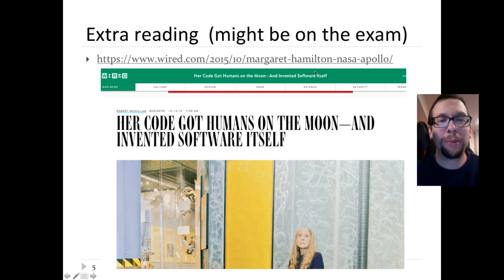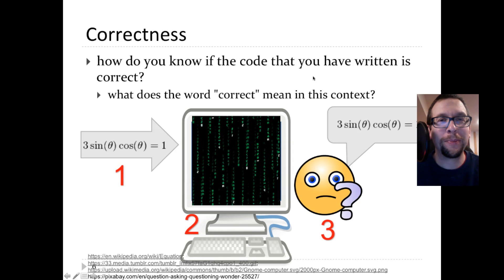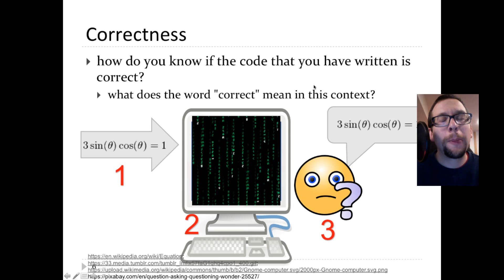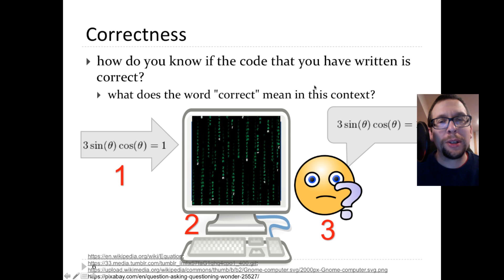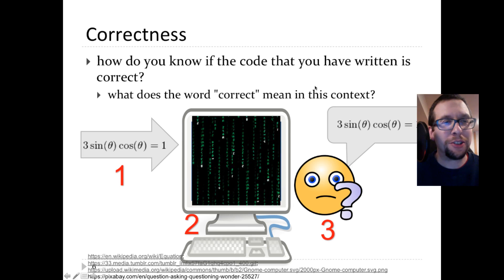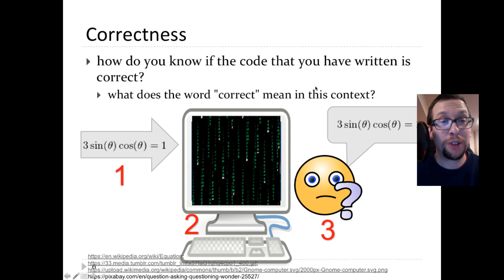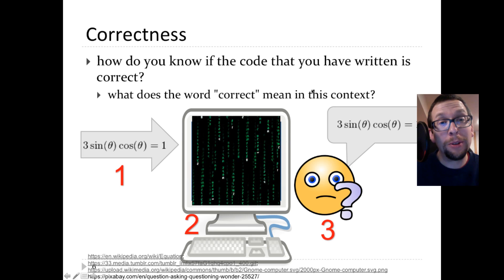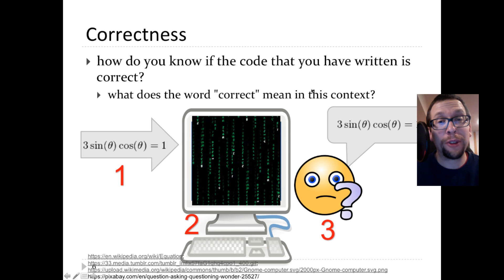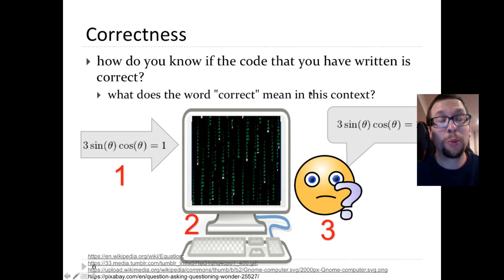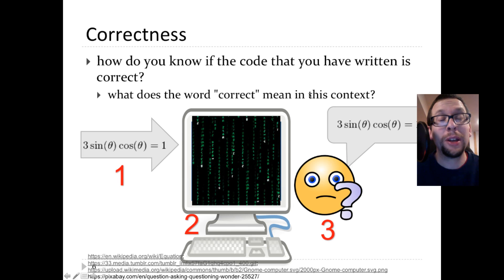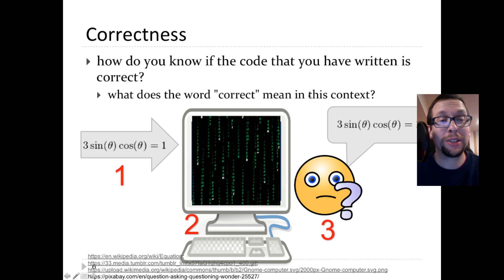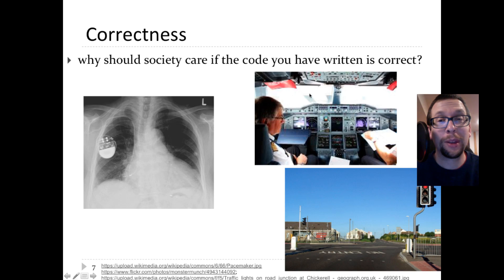Just in case it might appear on the final exam, I do recommend that you read the story about Margaret Hamilton's work. You'll find it at wired at this particular web address. So we want to talk about error checking and checking the correctness of software. Today we're going to talk about how do you try and figure out if the code that you wrote is truly correct, what are the tests that you can do to verify the actual correctness of your system.